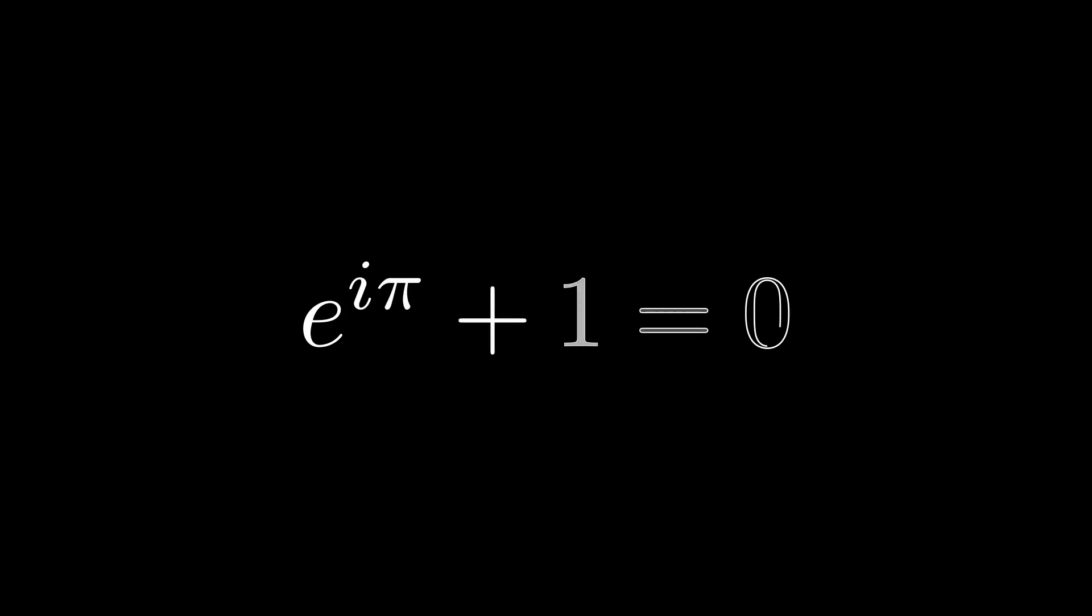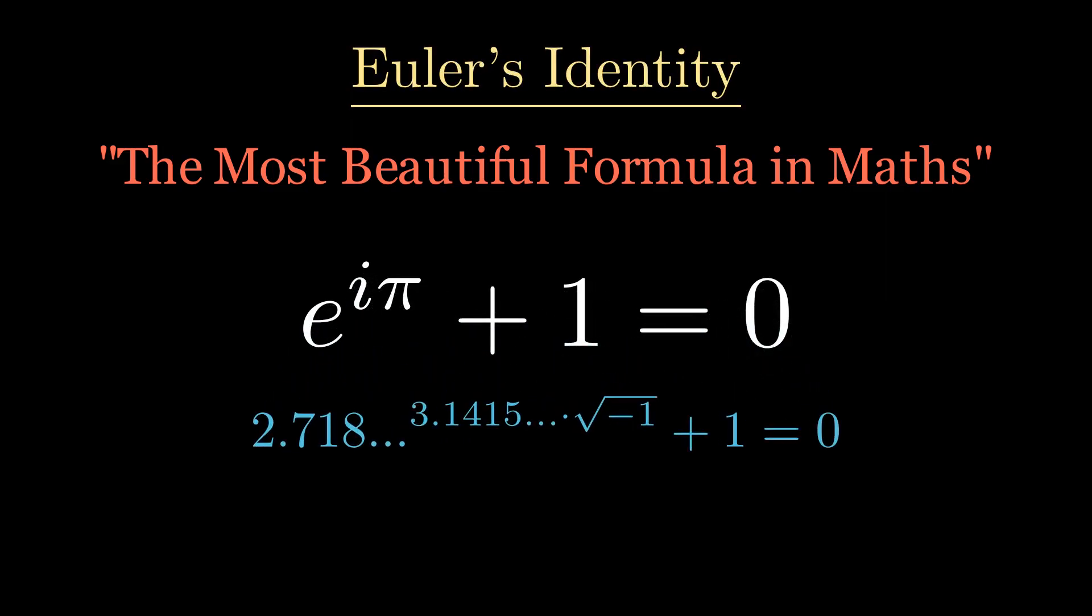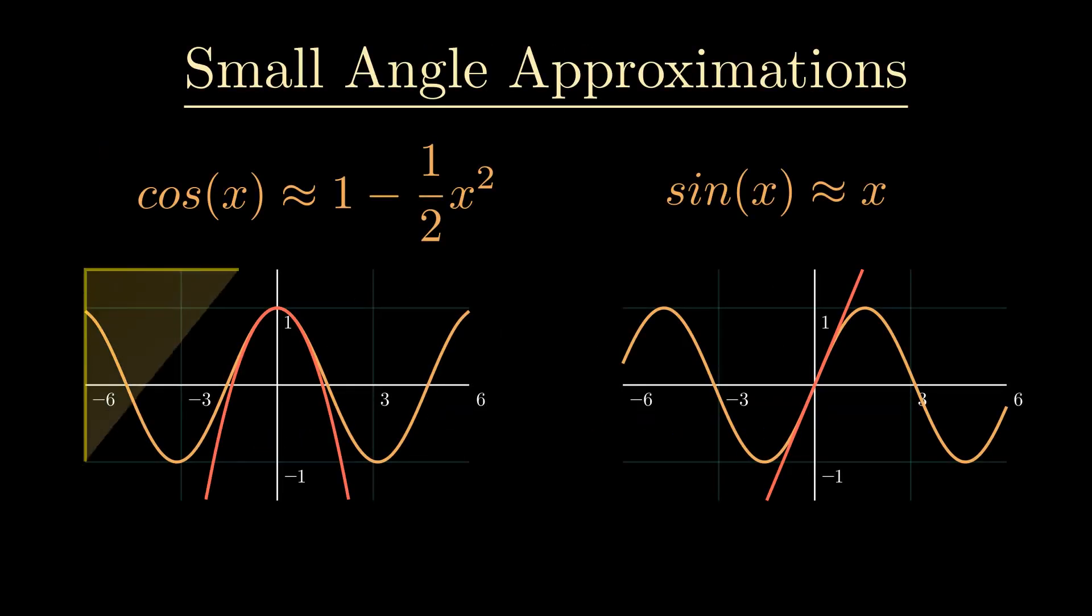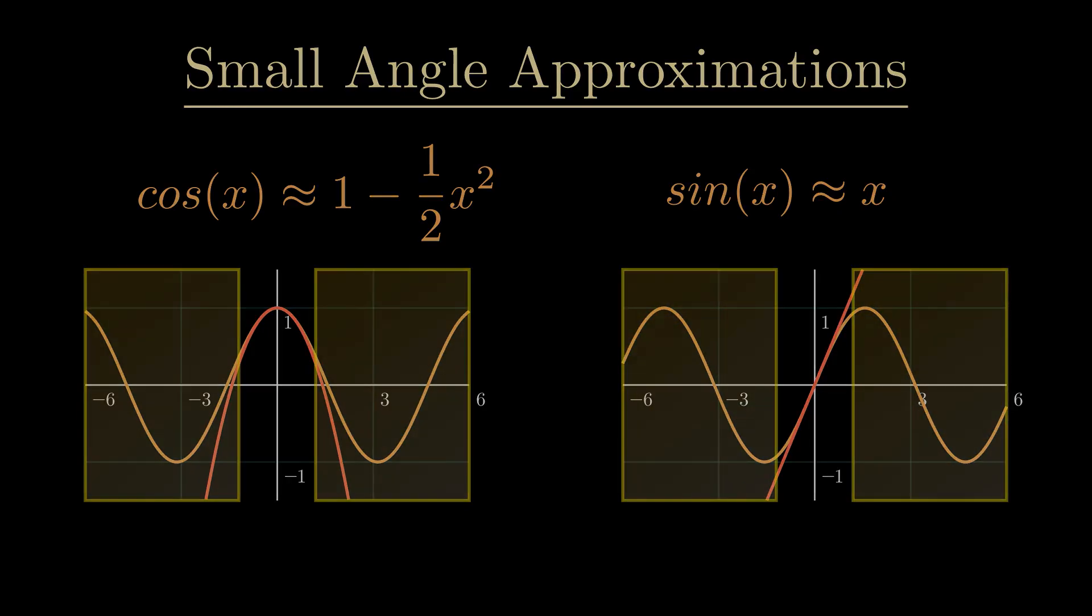Euler's identity, the most beautiful formula in maths. I'm sure you've seen this formula countless times and I've personally wondered how something like this could even be proven. It's an irrational number raised to an irrational number multiplied by an imaginary number. In this video I'm going to explore the elegance not only of this proof but the simplicity of the method.